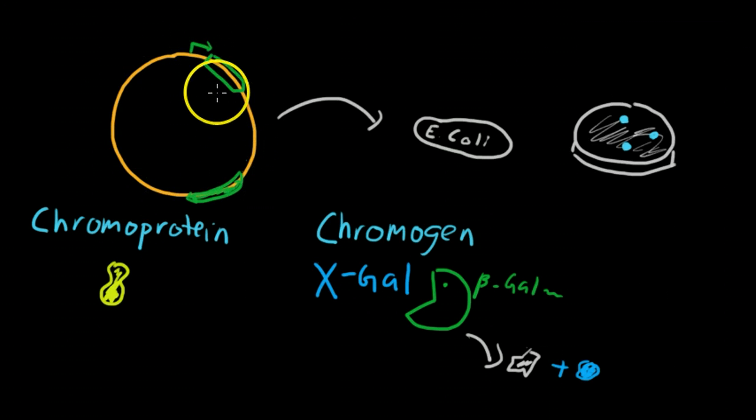So we're using this plasmid to code for two different products. One of them is the reporter, and the other one is the actual gene of interest. And that situation can also be used to test whether or not our gene of interest is being coded for. So we could use the exact same promoter that we used in this region up here for beta-galactosidase. And then we know that if beta-galactosidase is being coded for, then also our gene of interest is being coded for. And it could be a way of quantifying that as well.